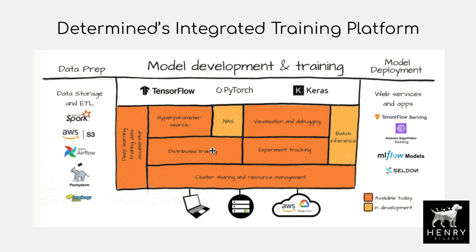The next offering is distributed training. In current versions of TensorFlow and Keras, you may be used to things like TF.distributed strategy or the mirrored strategy. Determined AI has an API to handle distributed training for you in a similar way — just a few lines of code that handle distributed training without you having to worry about the details.